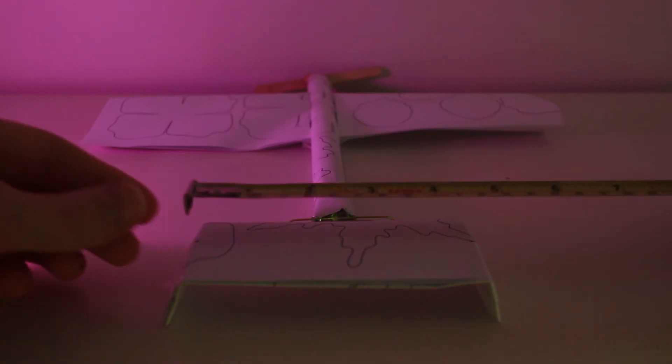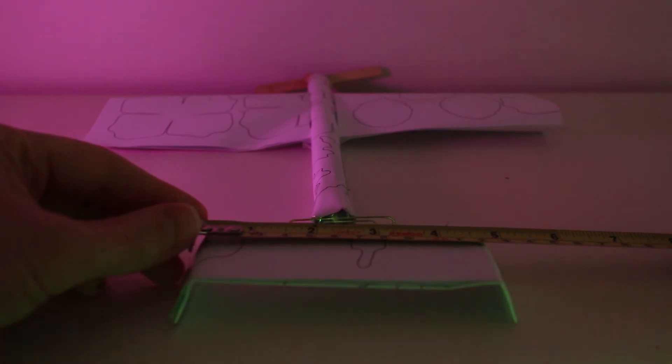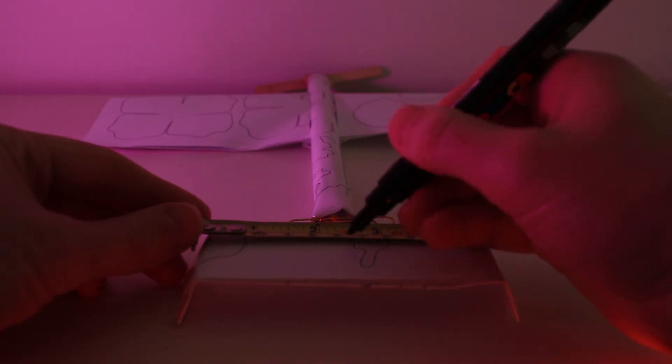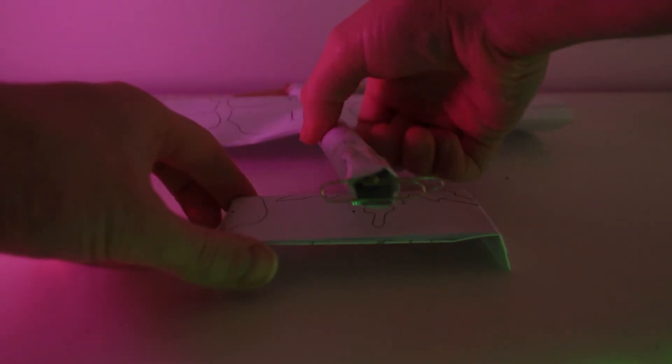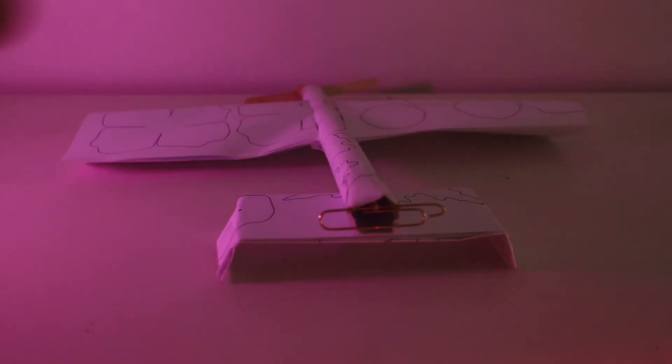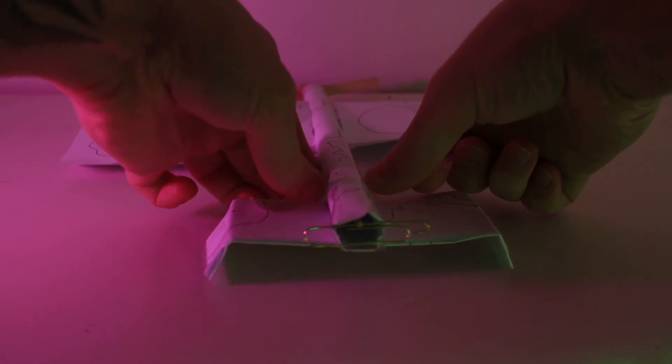Now place the wing behind the fuselage. Measure out the middle point. This is where we're going to mount it to the fuselage. Place the wing on the fuselage and then stick it down with some tape or a glue gun.